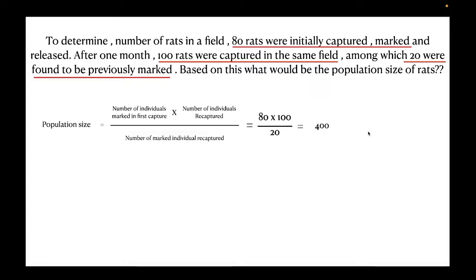Now for this to work, we need to keep in mind that there should be no immigration or emigration. That is, none of the rats should move out of the field or none of the extra rats should come inside the field. And also the marks which are applied to the animal should not harm the animal or affect the animal's survival negatively. So these are some assumptions that is to be kept in mind.